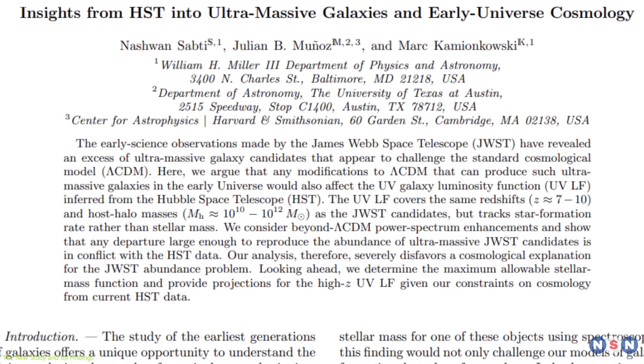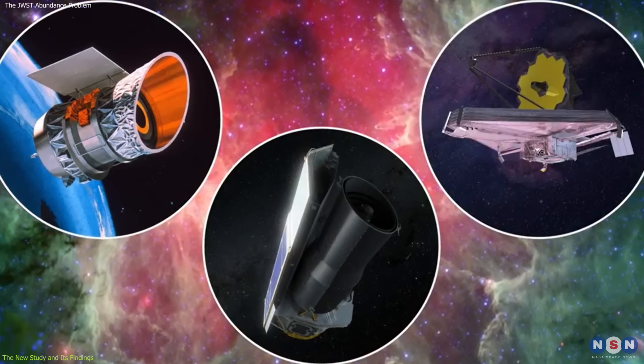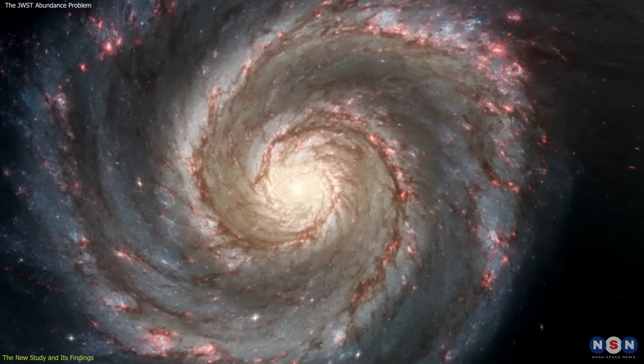The study suggests some ways to test and correct for these errors, such as cross-checking with other telescopes, using different methods to estimate the mass, and applying more stringent selection criteria.